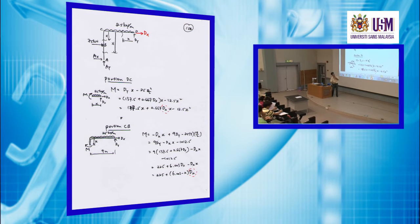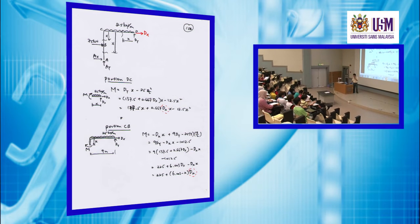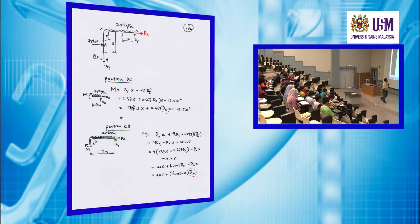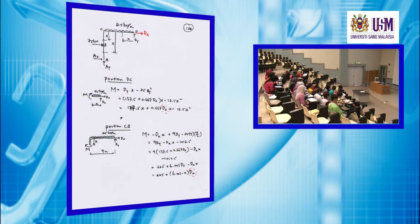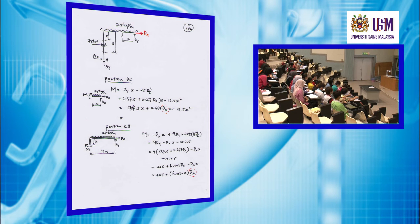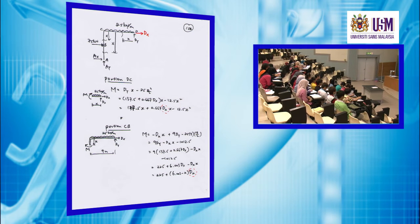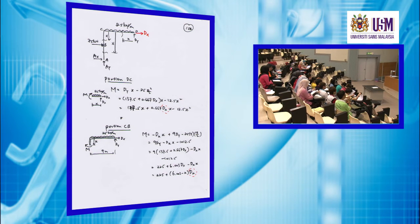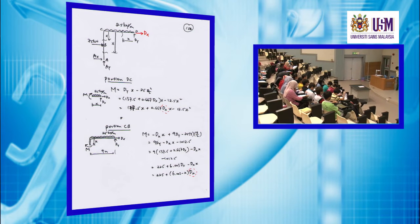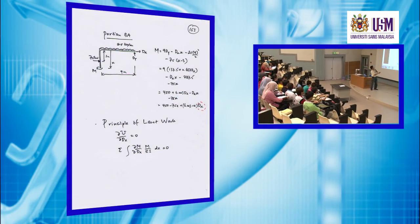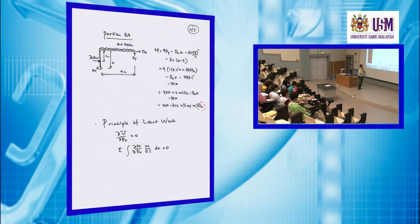The next part — use the appropriate free body diagram, then you should be able to get the bending moment. Consider DX as a loading and finally you get the bending moment as a function of DX again. For the last part, X starts from this origin. Use this free body diagram — notice that DX is still applied here. Again, the bending moment for this part is a function of DX.